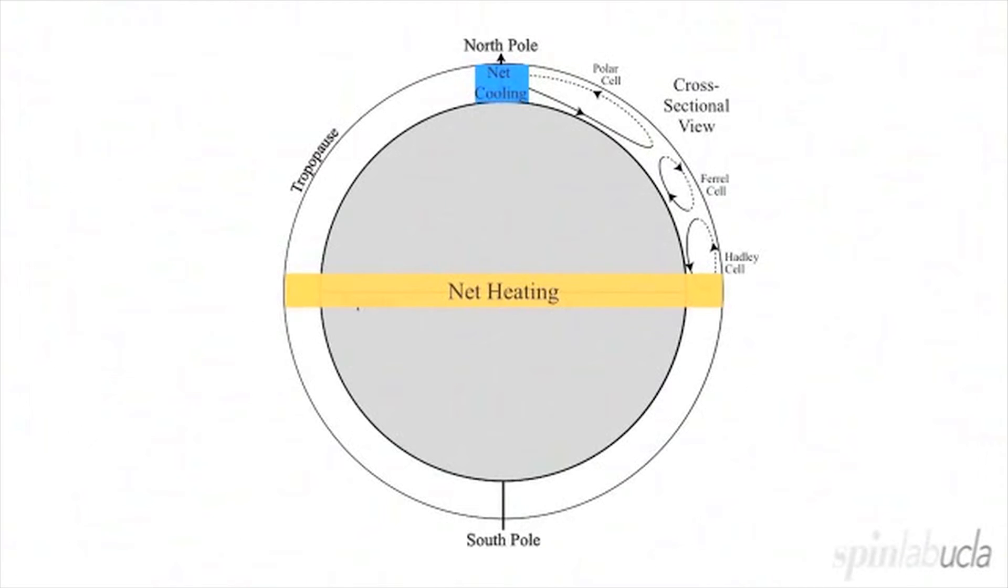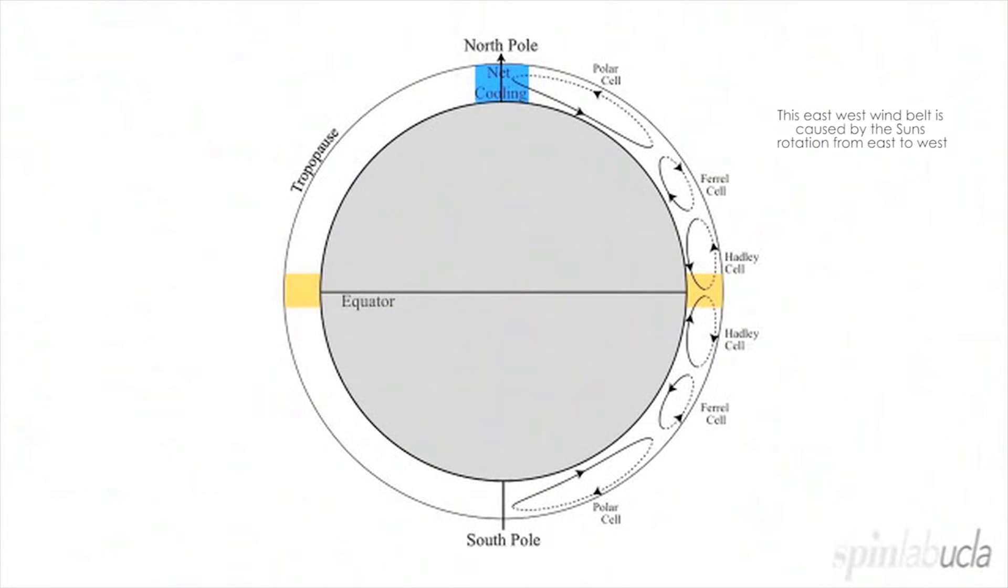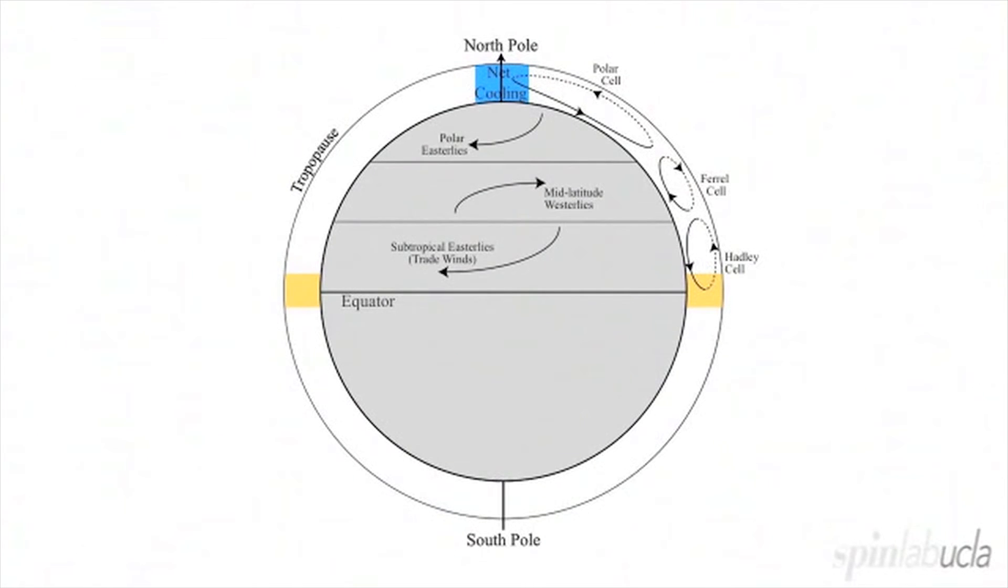There's a polar cell, then a Ferrel cell in the middle latitudes, and then an overturning Hadley cell nearest to the equator. If we look on the surface of the planet in map view, affiliated with each of these cells is an east-west wind belt. The Hadley cell has the trade winds going from east to west. There are the westerlies in the mid-latitudes and the polar easterlies at higher latitudes.